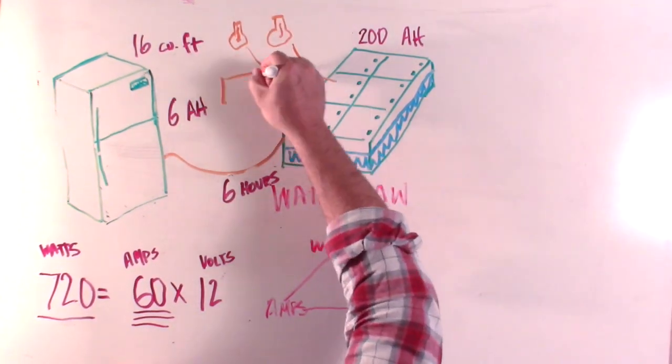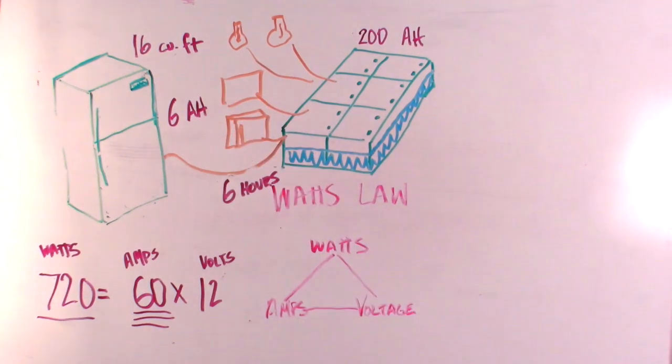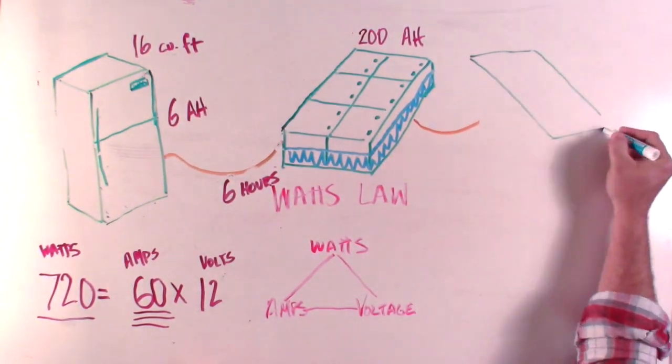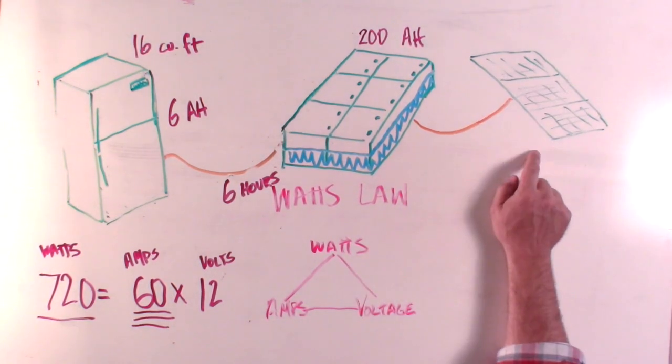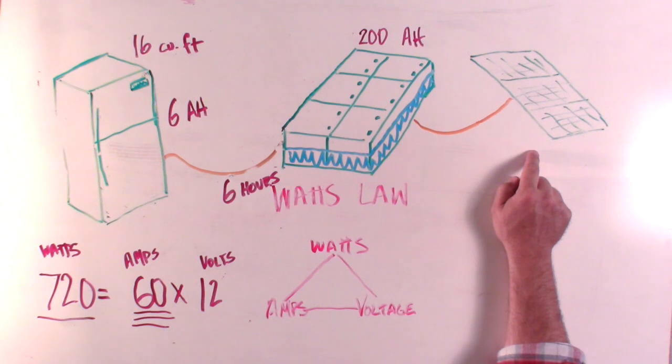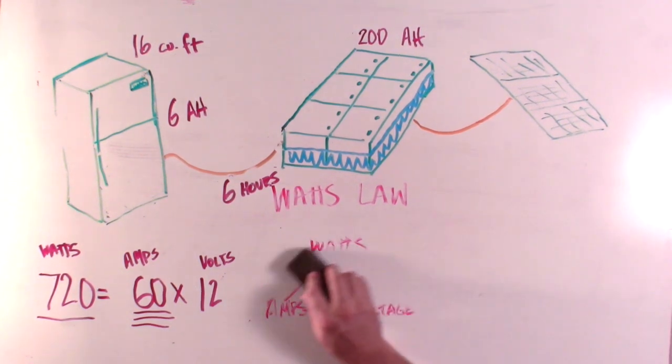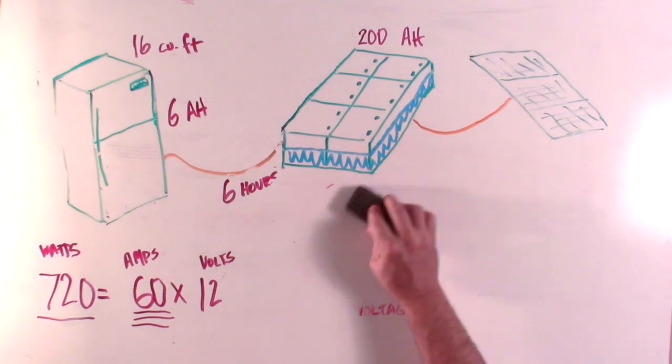And all of this is assuming you're running nothing else. Turn on a light, a TV, or a microwave, and you have even less time. Well, that's what solar panels are for, Josh. You can put two or three solar panels up there and run that fridge. Nuh-uh. Just how many solar panels would you need to run only one residential refrigerator for 24 hours and nothing else? Have a guess? Let's do the math.